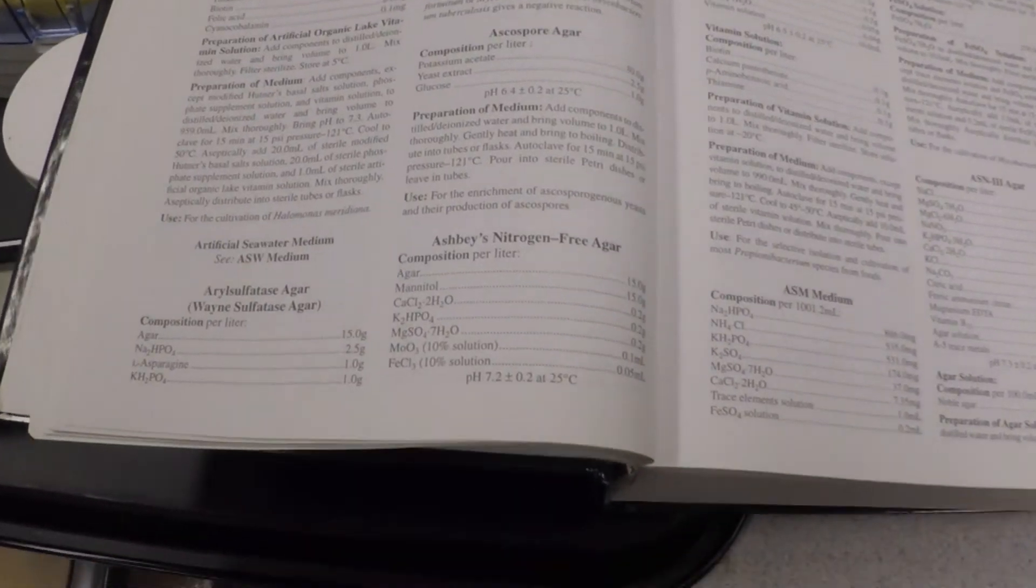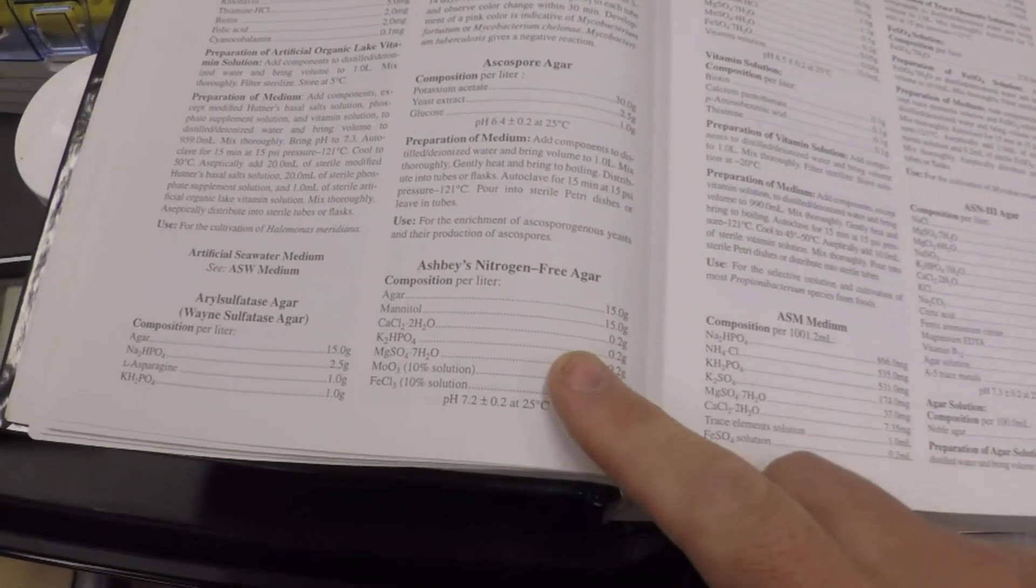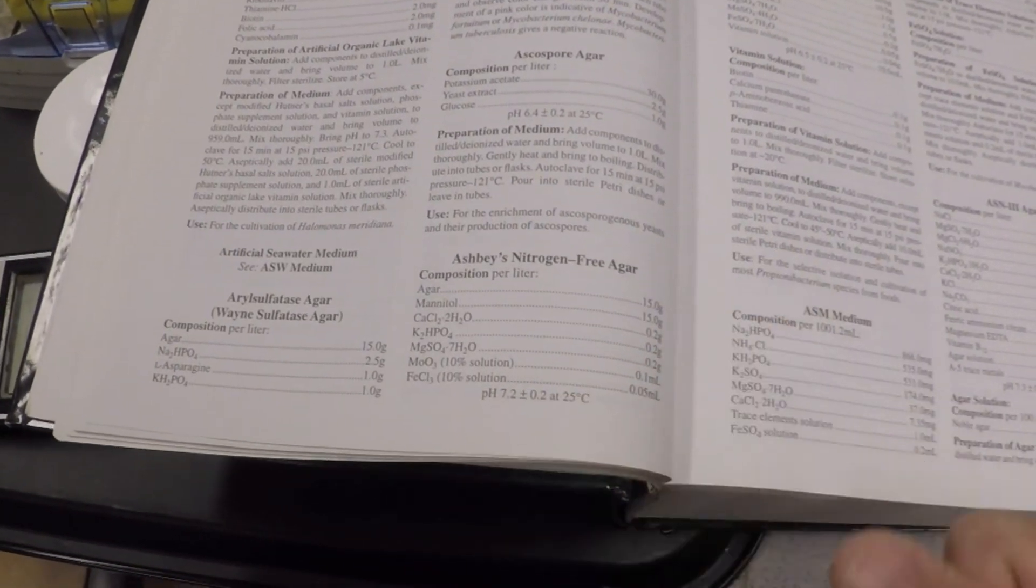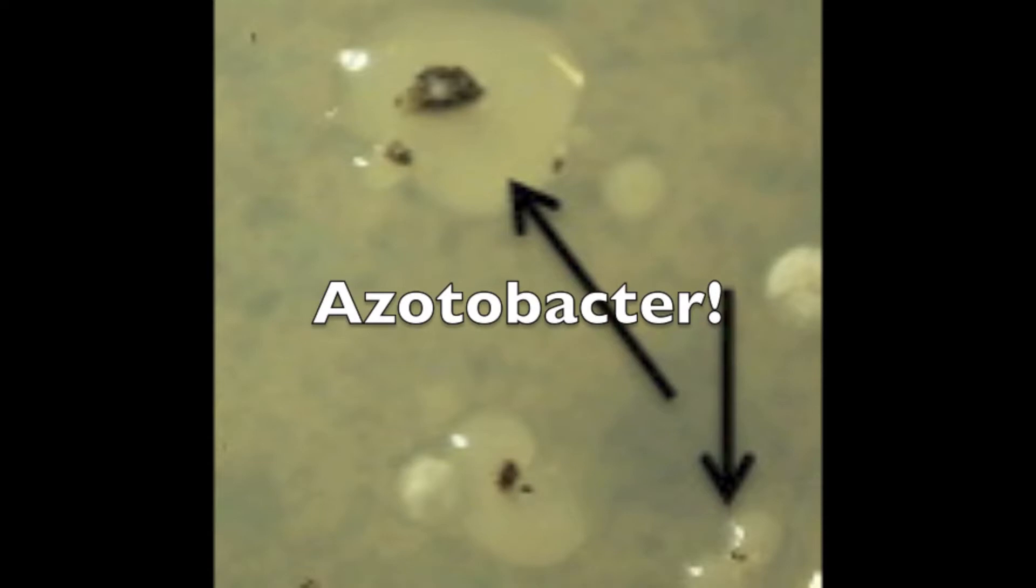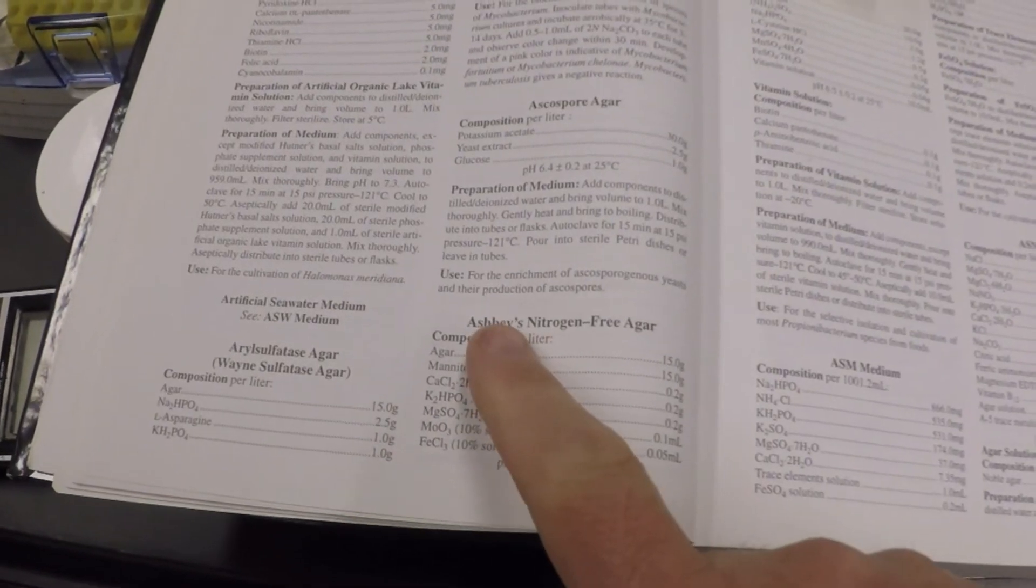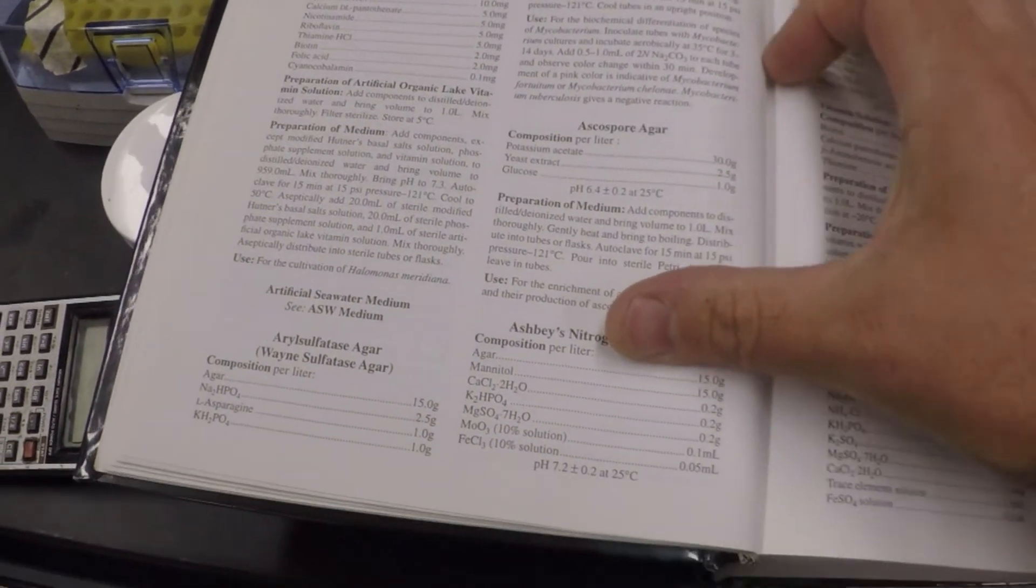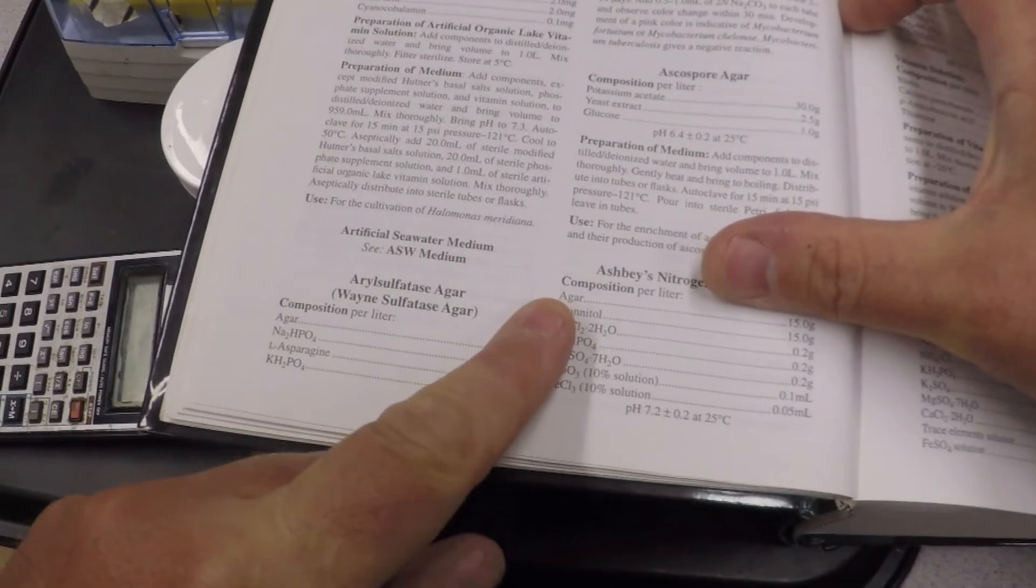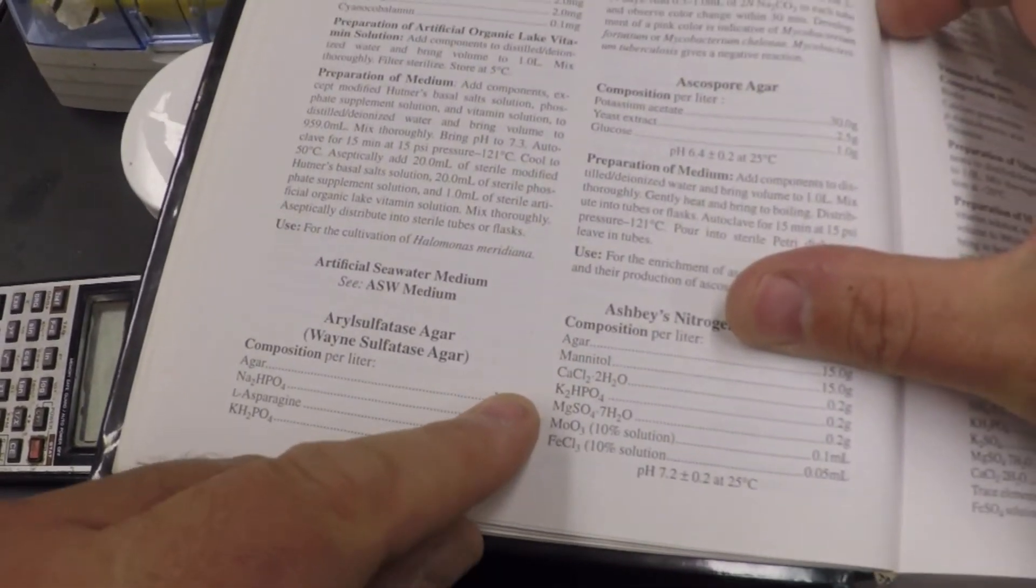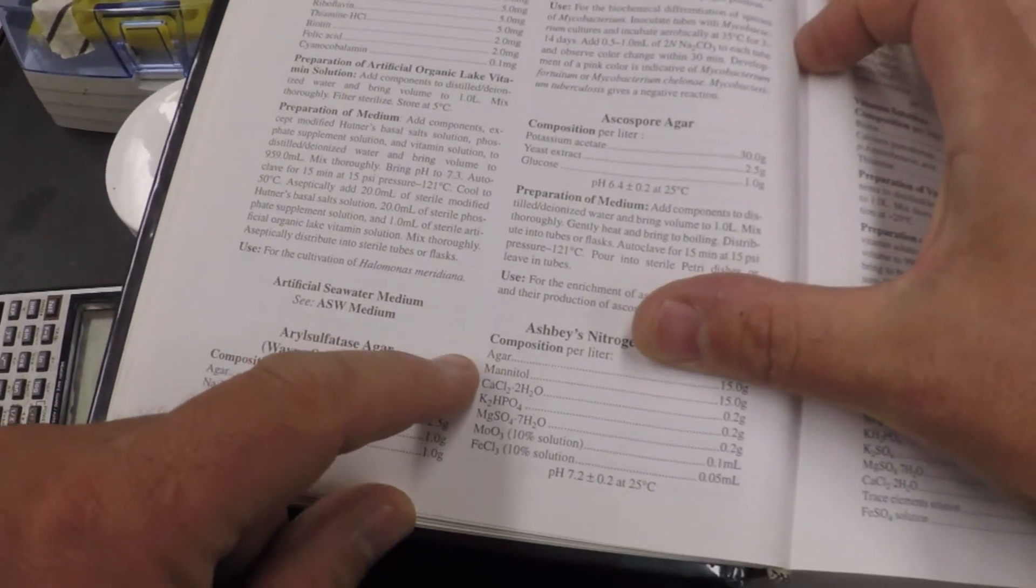We are going to attempt to isolate an organism called azotobacter, which is a free-living nitrogen fixer. We're making media called Ashby's medium. Now when you look at the materials here, and it says agar, that's just a solidifying agent, right? Mannitol,